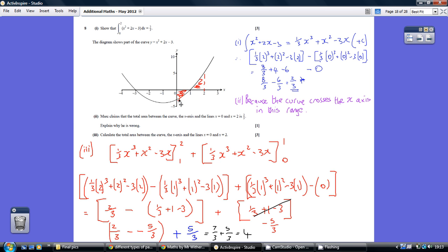Next, we work out the area between 1 and 0. Substitute 1 and subtract 0. This gives us -5/3, but you can't have a negative area, so we don't subtract 5/3.